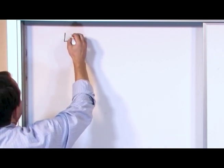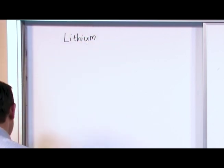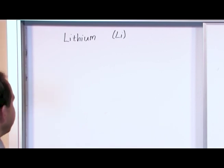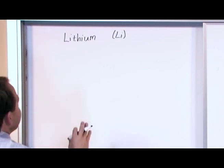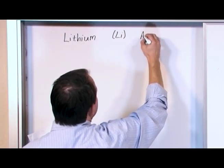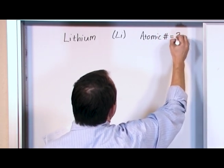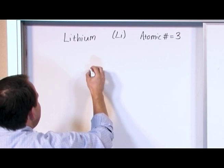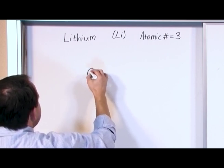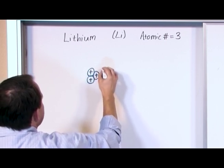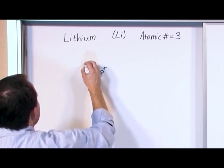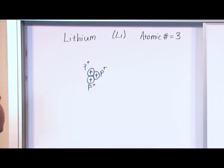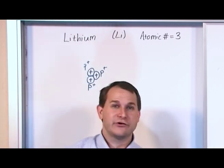Let's take lithium as an example. You can find the symbol Li on the periodic table. Lithium's atomic number is three, which means it has three protons in the nucleus — three positive charges. There are also neutrons in the nucleus, but I'm not going to draw them here to keep things simple. The number of neutrons determines the isotope, and since neutrons have no charge they don't participate in charge discussions.